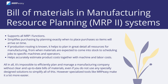Bill of Materials in Manufacturing Resource Planning, MRP2, systems supports all MRP1 functions, simplifies purchasing by planning exactly when to place purchases so items will arrive on time. If production routing is known, it helps to plan in great detail all resources for manufacturing — from when materials are expected to come into stock, to scheduling jobs to specific machines and operators, and helps accurately estimate product costs, together with machine and labour costs.